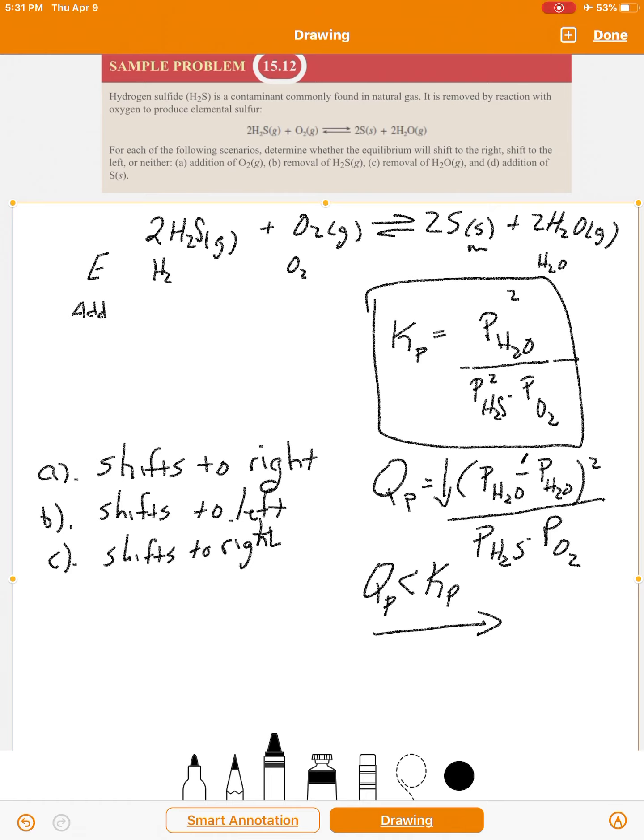And the physical meaning of shifts to the right is that the reaction will go in this direction and you'll start producing more of these and the amounts of these will decrease. Okay, so you're making the change, but it's going to make an additional change. The system itself will make an additional change.